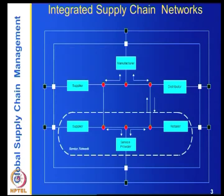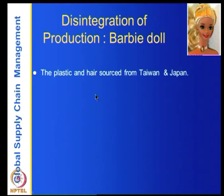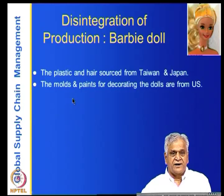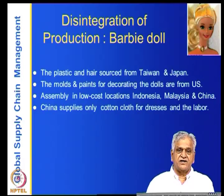As an example, suppose you are making a Barbie doll — famous and sold in the US. In such a network, the plastic and hair are sourced from Taiwan and Japan. The molds and paints for decorating the dolls come from the US. Assembly happens in low-cost locations in Indonesia, Malaysia, and China. China also supplies the cotton cloth for dressing the doll, as well as the labor for all of this.